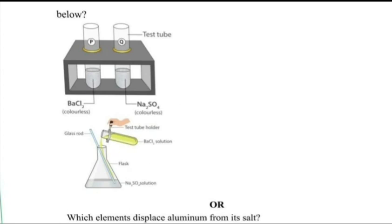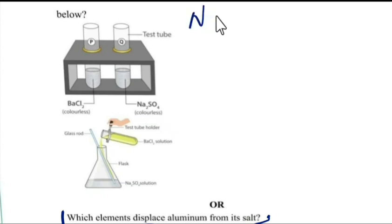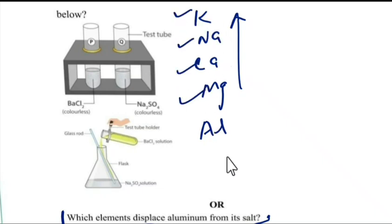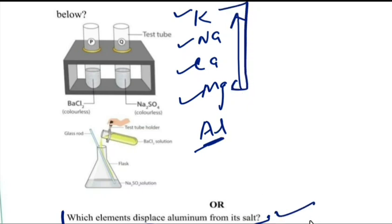Which elements can displace aluminium from its salt? Looking at the reactivity series, potassium, sodium, calcium, and magnesium are above aluminium. These four highly reactive elements can displace aluminium from its salt. So potassium, sodium, calcium, and magnesium are more reactive than aluminium and can displace it.